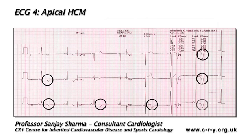You will appreciate that the T-waves are markedly inverted, that is, more than minus 0.5 millivolts. This pattern of very deep T-wave inversions in the anterior or lateral leads should raise the suspicion of apical hypertrophic cardiomyopathy.